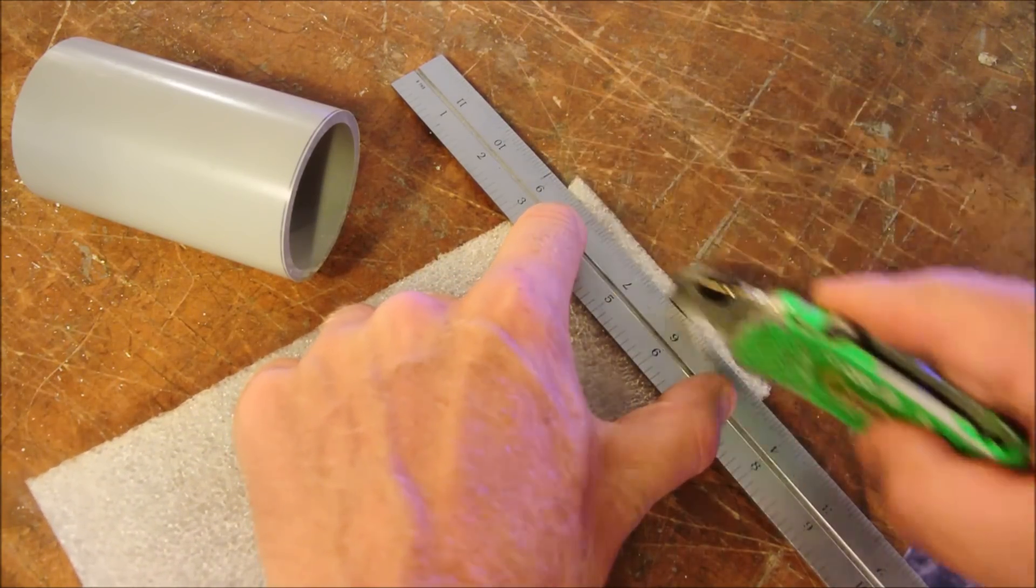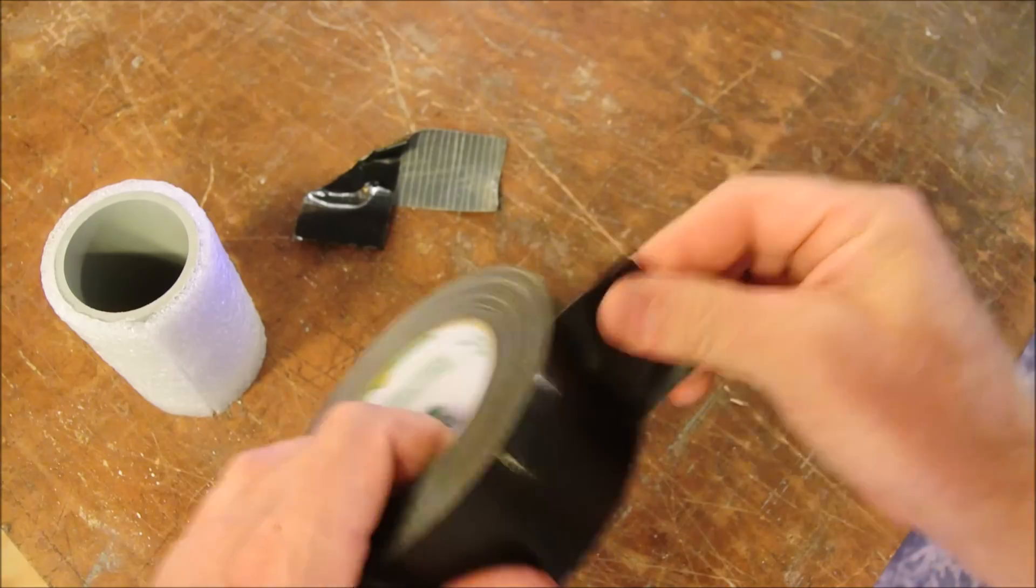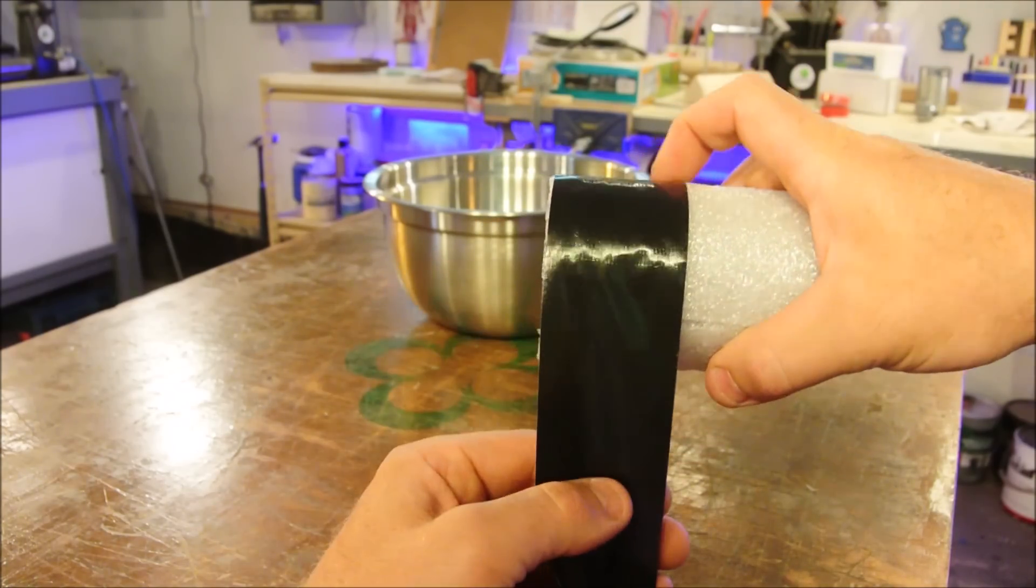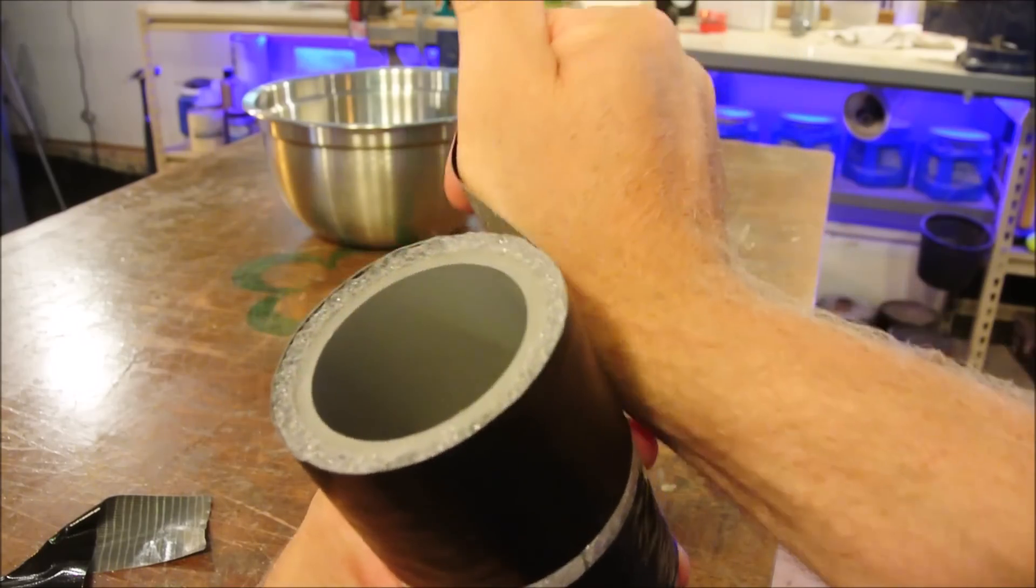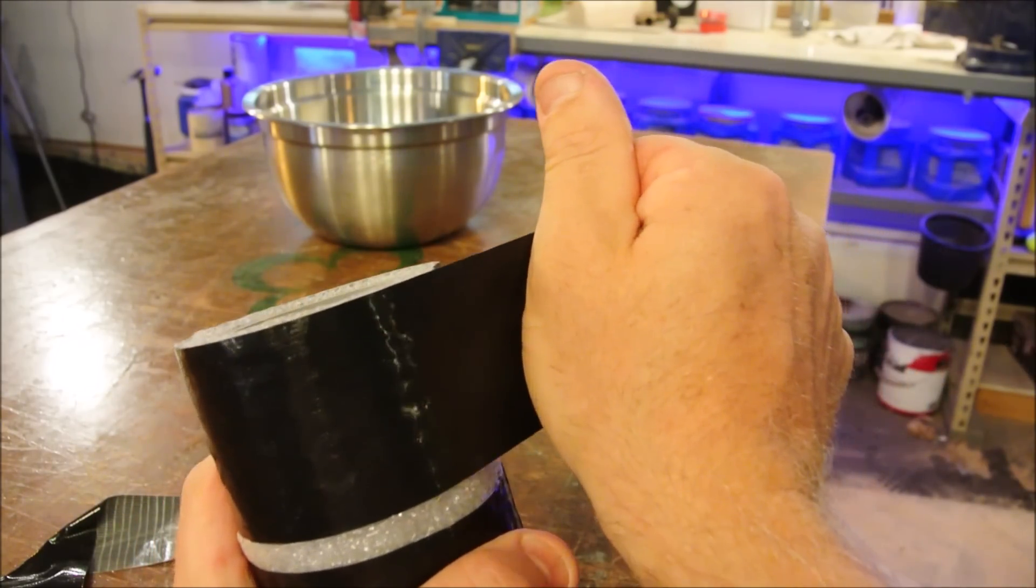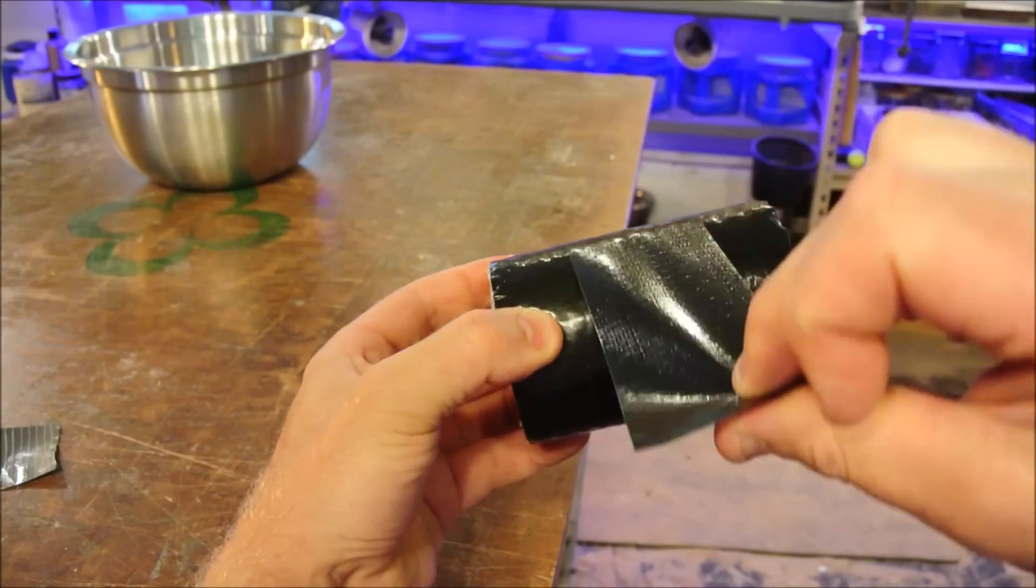Whenever you're designing a form, one thing not to be overlooked is repeatability. In this case, we have to cast four of these parts. So whatever form we design, we should design it so that we don't have to build it four times. You may have to replace the duct tape, but hopefully we don't even have to replace that.